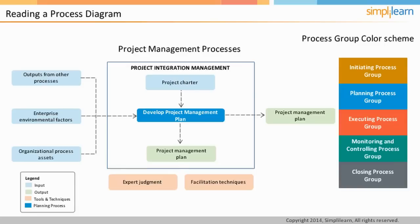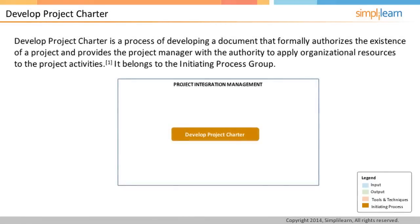Develop Project Charter is an initiating process. A project charter is essentially a document that authorizes a project. Once a project has received a charter, it means that the project manager can start employing the organization's resources for project activities. The first input is the Project Statement of Work, created by the project sponsor or the customer describing their needs, project scope, and how the project fits into their strategic goal. If the project is taken up under a contract, the Request for Proposal (RFP) can be considered as the Project Statement of Work.